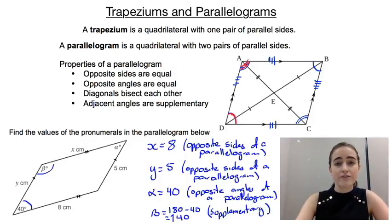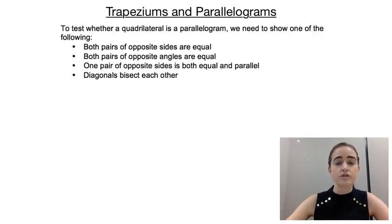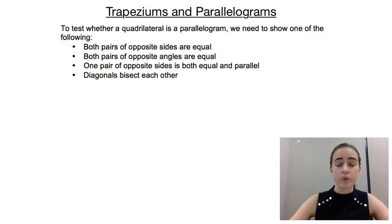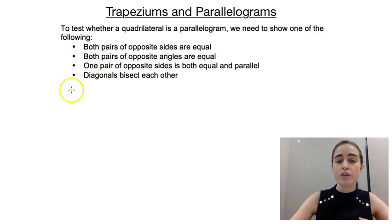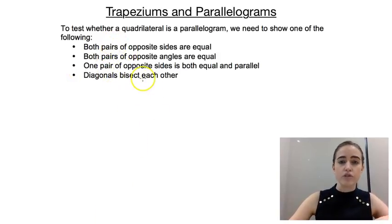That's an example of how we can find values if we know the shape is a parallelogram. But we also want to be able to prove that a shape is a parallelogram. To prove a quadrilateral is a parallelogram, we need to prove one of four things: both pairs of opposite sides are equal; both pairs of opposite angles are equal; one pair of opposite sides is both equal and parallel; or the diagonals bisect each other. You only need to prove one of those four points.